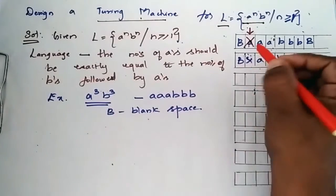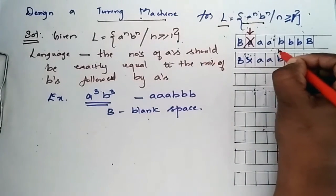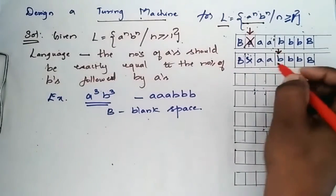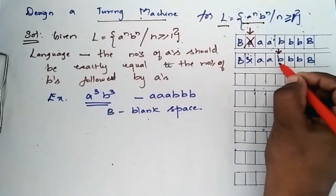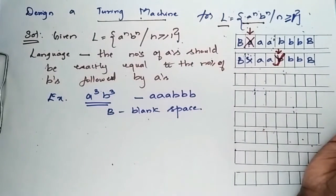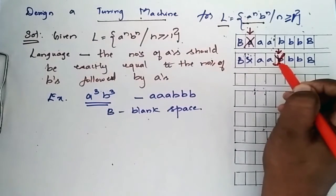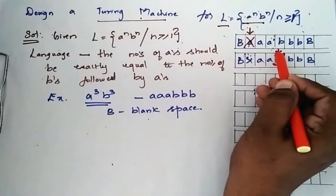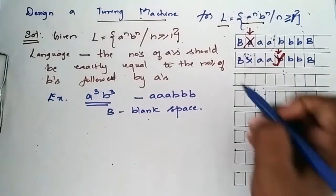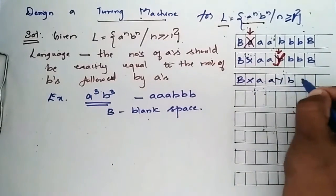The tape header moves right and then reaches the first 'b'. This 'b' is replaced by 'y'. Once this 'b' is replaced by 'y', the tape header moves left. Now my string will look like this.